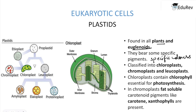Chloroplast contains the green-colored pigment called chlorophyll and it is essential for photosynthesis that takes place in all plants and euglenoids. Chromoplast contains fat-soluble carotenoid pigments such as carotene and xanthophylls.